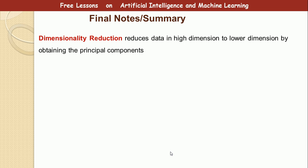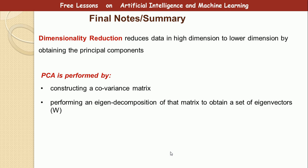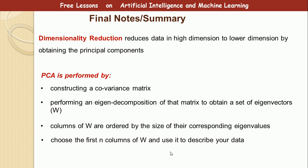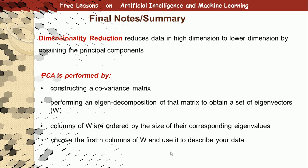To summarize: dimensionality reduction reduces data from high dimensions to lower dimensions by obtaining principal components. PCA is performed by constructing a covariance matrix, performing an eigendecomposition to obtain a set of eigenvectors, ordering the columns of W by size of their corresponding eigenvalues, then choosing the first r columns of W to describe your data.